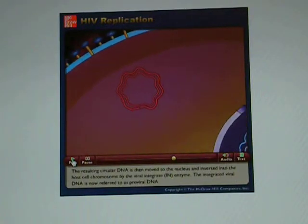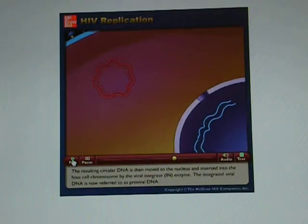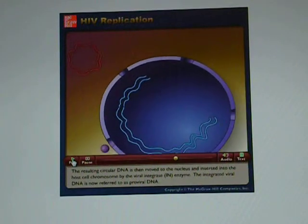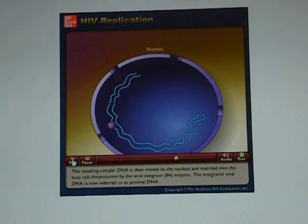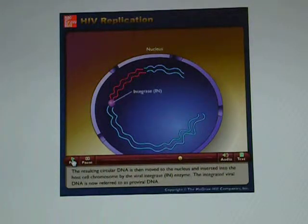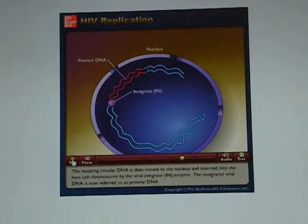The resulting circular DNA is then moved to the nucleus and inserted into the host cell chromosome by the viral integrase (IN) enzyme. The integrated viral DNA is now referred to as proviral DNA.